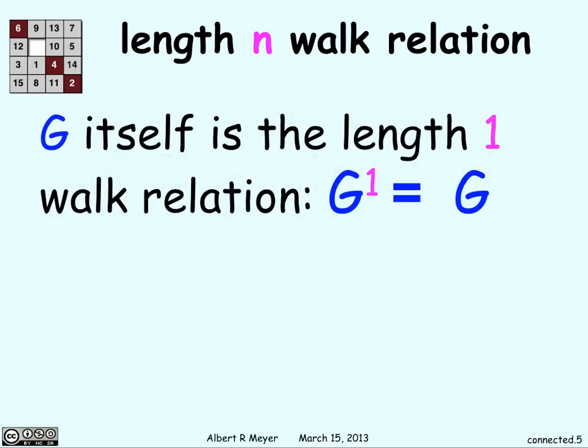And g itself, when you think about it, is a length one walk relation. The graphs define these relations, and there's an edge from one vertex to another if there's a length one edge from one vertex to another.